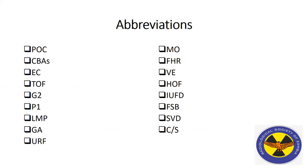Let's look at the abbreviations we'll use. POC stands for Pentalogy of Cantrell, CBA means congenital birth anomalies, EC stands for ectopia cordis, TOF for Tetralogy of Fallot. G2 means gravida 2, P1 para 1, LMP last menstrual period, GA gestational age, URF ultrasound request form, MO medical officer, FHR fetal heart rate, VE vaginal examination, HOF height of fundus, IUFD intrauterine fetal death, FSB fresh stillbirth, SVD spontaneous vaginal delivery, and CS caesarean section.